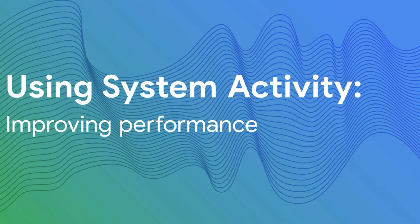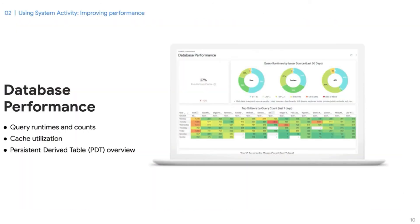For troubleshooting or finding opportunities to enhance performance, System Activity has two useful dashboards that will help you monitor what is happening under the hood of your Looker instance: the Database Performance Dashboard and the Instance Performance Dashboard. Let's deep dive into them. The Database Performance Dashboard is centered around understanding the volume of Looker queries and the duration of such queries.